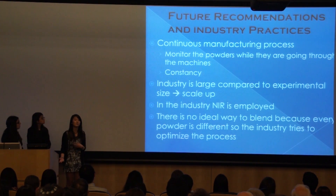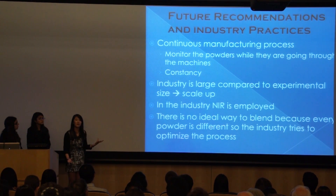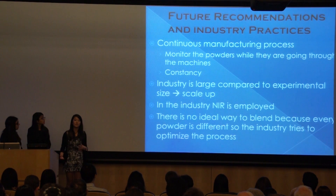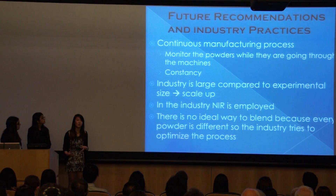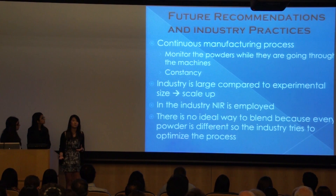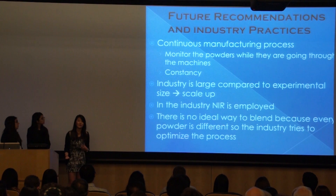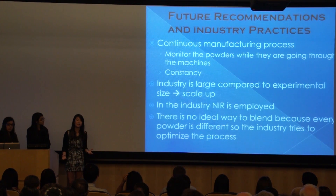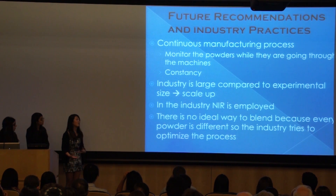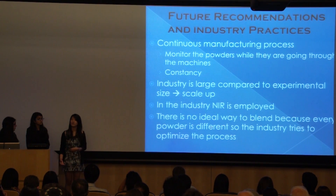To address these issues, the industry has developed new methods such as continuous manufacturing, where one can determine the percent composition of the blend as it goes directly through the machine, rather than only sampling it afterwards. Because our experiment was small and the industry is so large, there are different factors that can have a larger impact on the manufacturing process. However, what our experiment and the industry have in common is the use of NIR, a widely acclaimed analytical tool. Overall, there is no single ideal or standard way to make a certain batch of pills or powder, and the pharmaceutical industry is still developing, with pharmaceutical engineers continuing to optimize blend uniformity.